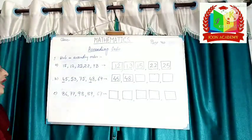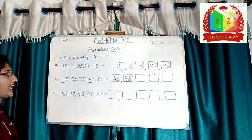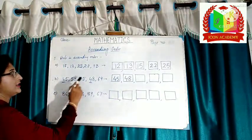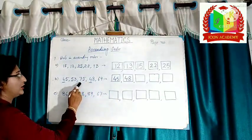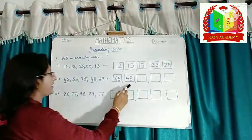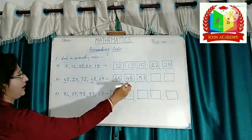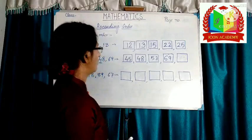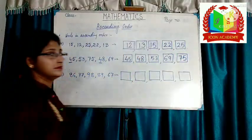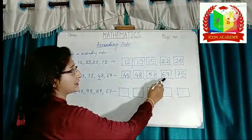After 45 comes 48. Now see the other three numbers: 53, 75, and 69. See the tens place first: 5, 7, 6. 5 is less than 6, and 6 is less than 7. So 53 is less than 69, which is less than 75. After 48 comes 53, after 53 comes 69, and then 75. So in ascending order the numbers are 45, 48, 53, 69, and 75.